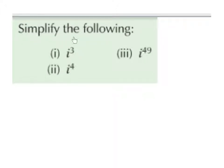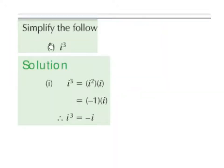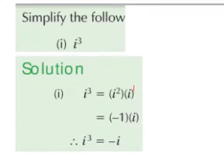Simplify the following: i to the power of 3, i to the power of 4, and i to the power of 49. Part 1 — simplify i cubed. i cubed can be broken down as i squared multiplied by i, which is i to the power of 1, because 2 plus 1 makes 3. From our rule: multiplying powers with the same base, we add the powers. So we have i and i, which is the same base, and we add the powers: 2 plus 1 is 3.